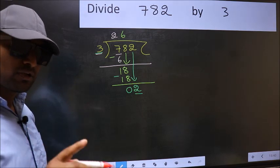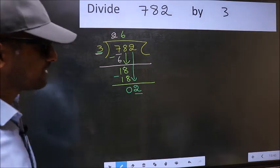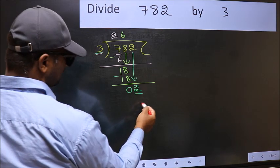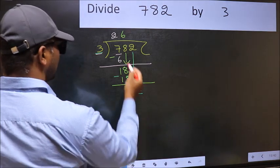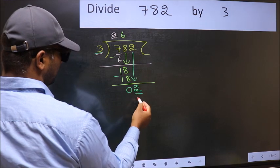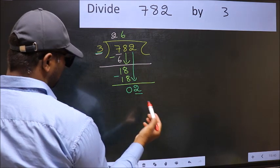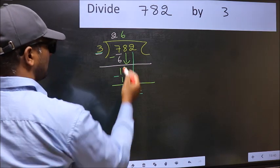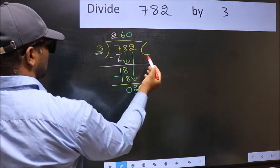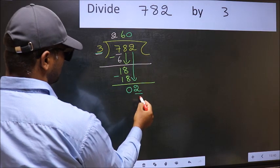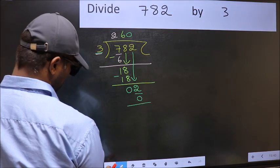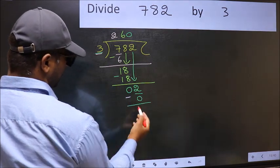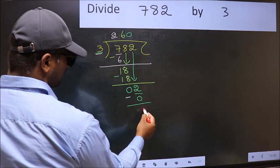Instead, what you should think of doing is, what number should we write here? If I take 1 here, I will get 3. But 3 is larger than 2. So what we should do is we should take 0. So, 3 into 0 is 0. Now you should subtract. 2 minus 0 is 2.